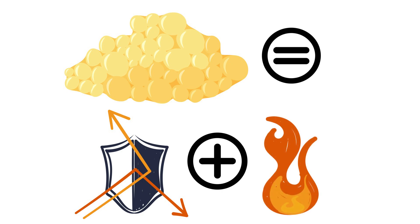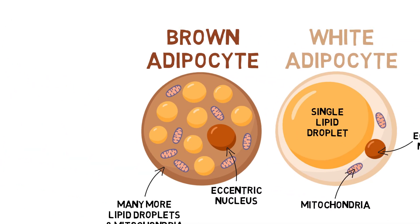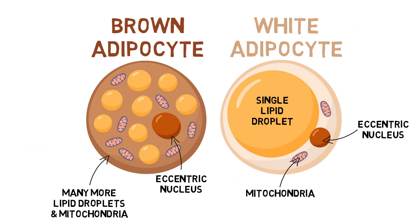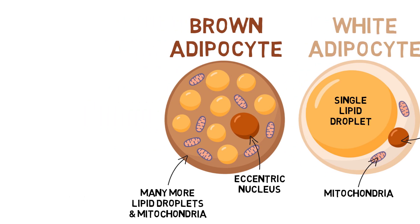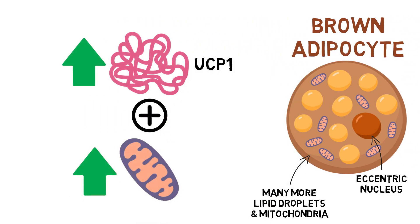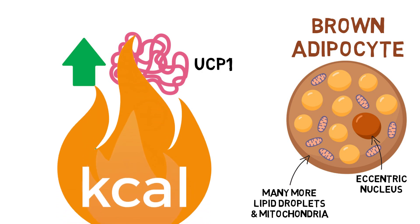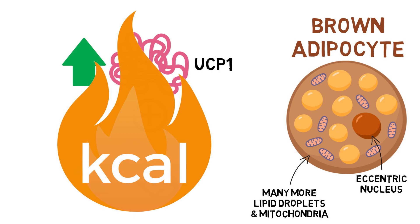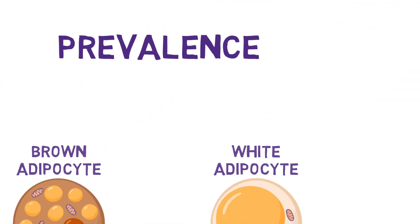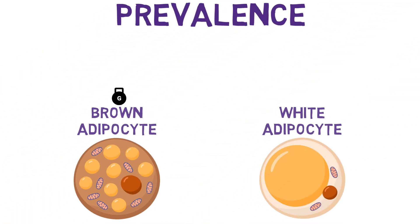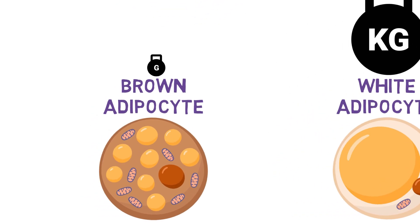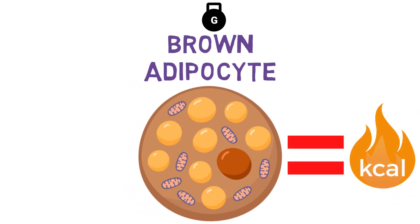Why brown adipocytes can do this and white can't comes down to their composition. Brown adipocytes have many more lipid droplets and mitochondria. With these increased levels of mitochondria, along with adequate levels of a protein called UCP1, they can burn calories for heat production — which makes sense when you consider that mitochondria are commonly referred to as the powerhouses of a cell. As for prevalence, making up only a few grams of our overall fat, they're not even in a ballpark close to their white counterparts. That's why, despite their ability to burn calories, brown adipocytes are only said to use around 20 calories a day, which is pretty much negligible.